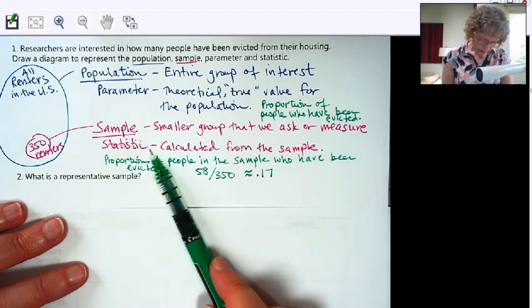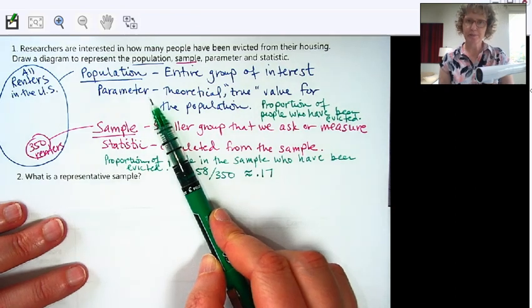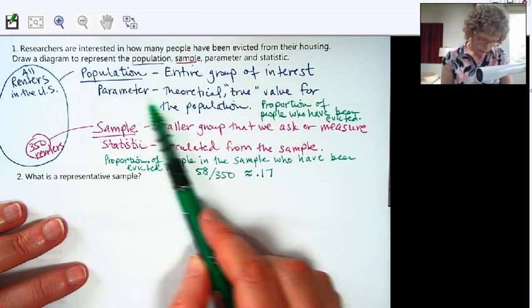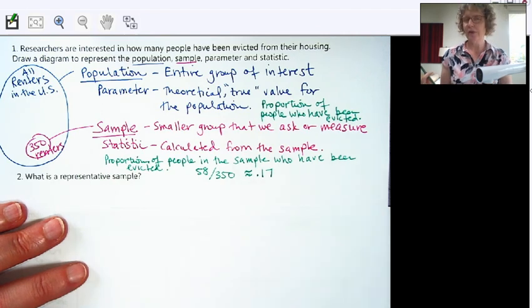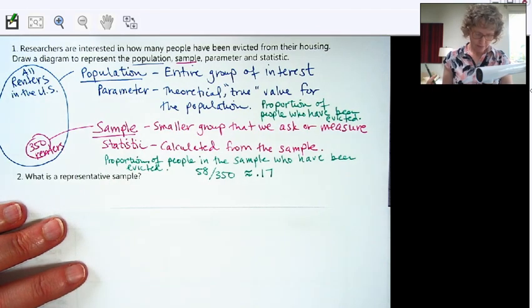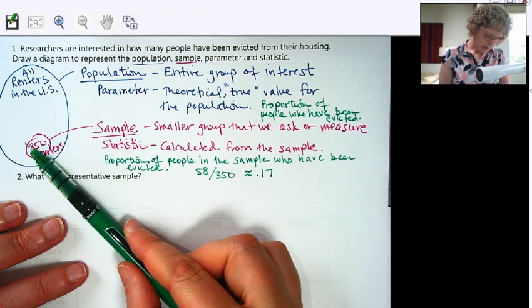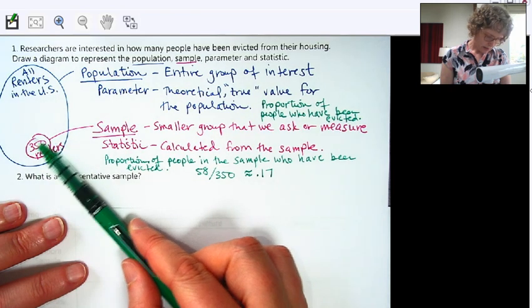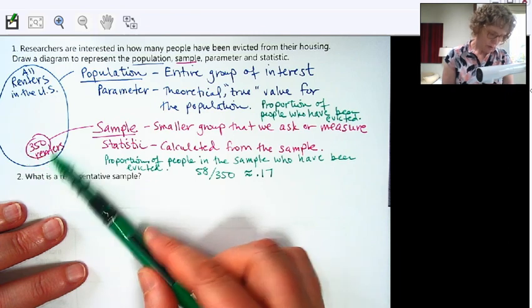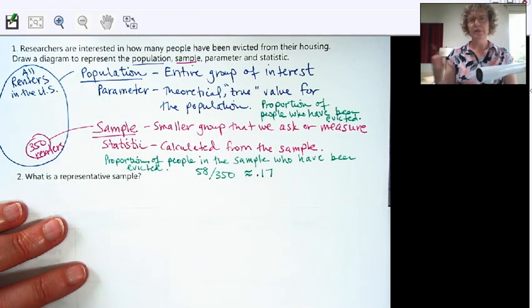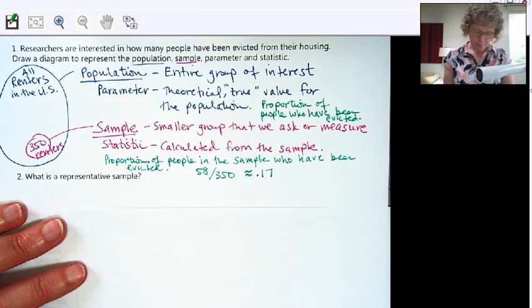Now the idea here is we want our statistic to estimate the parameter, right? This is what we want to know for the entire population. So we need to make sure we have a good sample and good methods to take a sample, and make sure that that value is representative of the entire population.